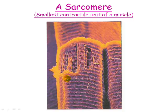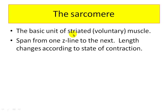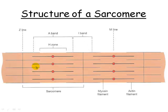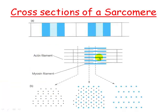Here's the sarcomere, which has a very characteristic striped appearance. The basic unit of striated muscle is the sarcomere, which spans from one Z-line to the next, and its length changes according to the state of contraction. Here's a single sarcomere — remember those stripes from a moment ago. The sarcomere runs from one Z-line across to the corresponding Z-line. Notice we've got myosin and actin in different zones. In cross section, towards the ends you've got only actin or only myosin, and at certain points you've got actin and myosin joined together.